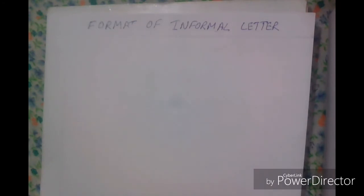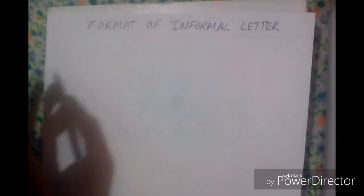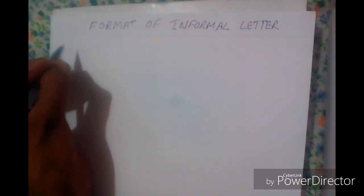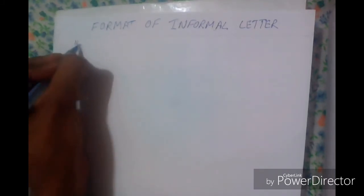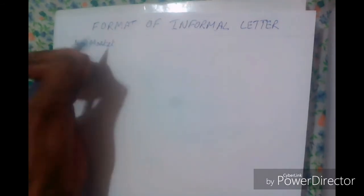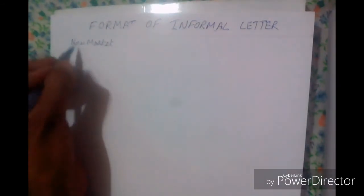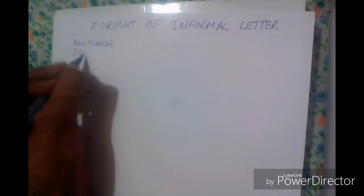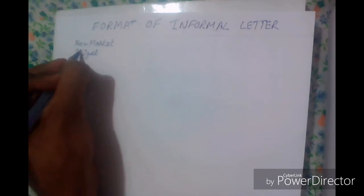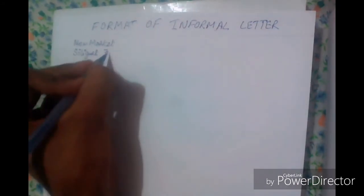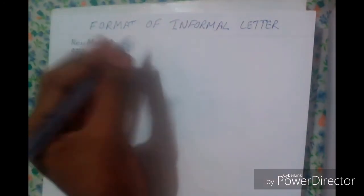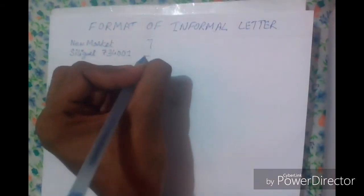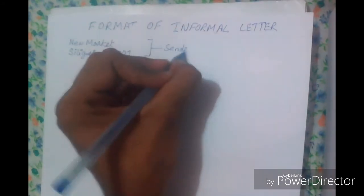First of all in this kind of letter writing we write the sender's address. So at first comes the sender's address. Let's suppose we write my own address — in the first line you write the location, for example 'New Market.' On the next line you write the city name, and then you write the pin code. This first part of your letter is the sender's address.